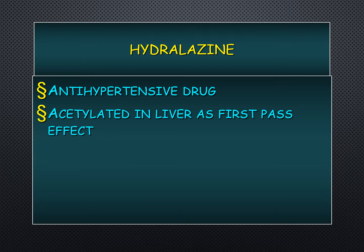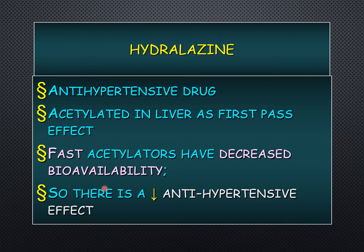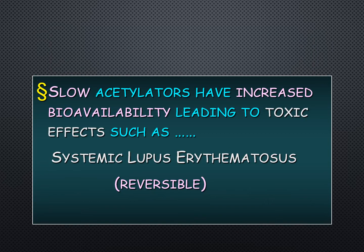Another pharmacogenetic example is hydralazine, an anti-hypertensive drug that is acetylated in the liver — its biotransformation occurs through acetylation. Some individuals are fast acetylators: their metabolism of the drug is very fast, leading to decreased bioavailability and decreased plasma half-life, so the anti-hypertensive effect is also decreased. Whereas slow acetylators metabolize it at a very slow rate, leading to increased bioavailability and toxic effects such as systemic lupus erythematosus (SLE), which is reversible.